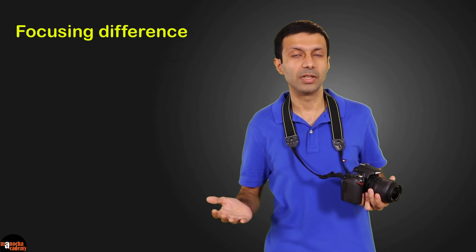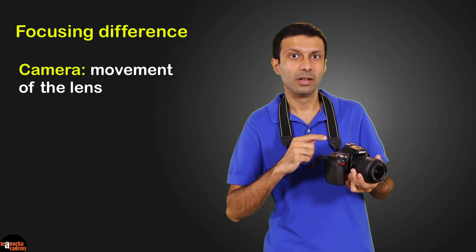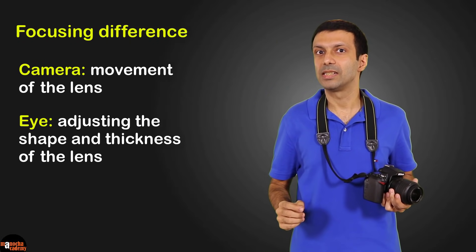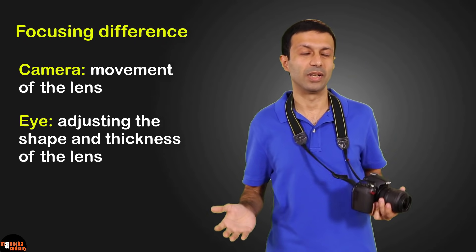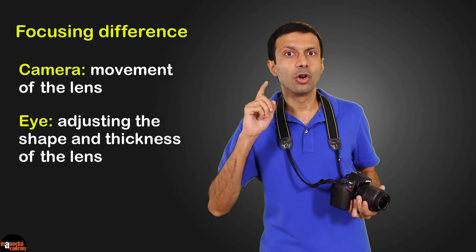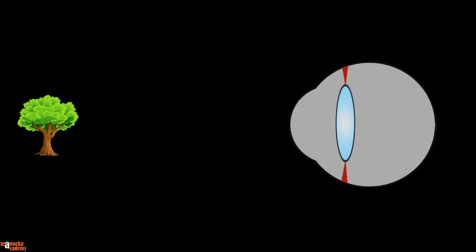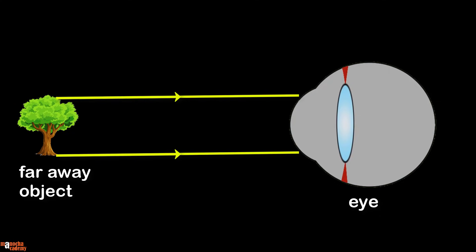Both the camera and the human eye have their own focusing mechanism, but there is an important difference. In the camera, focusing is done by the movement of the lens. But in the eye, focusing is done by changing the shape and thickness of the lens. When the eye is looking at an object far away — say a tree at infinity — the light rays will be parallel. The eye lens along with the cornea focuses the image on the retina and we can see a clear image of the tree.